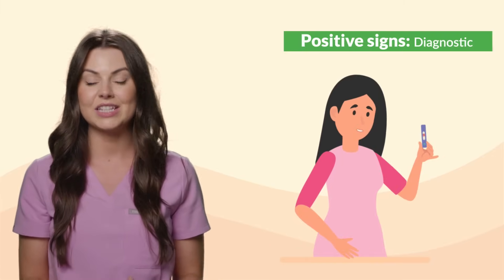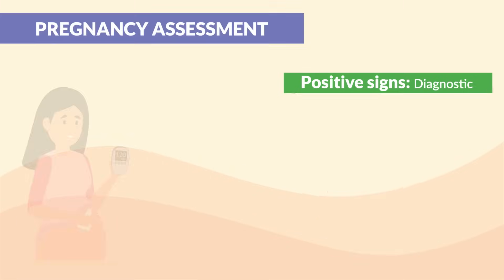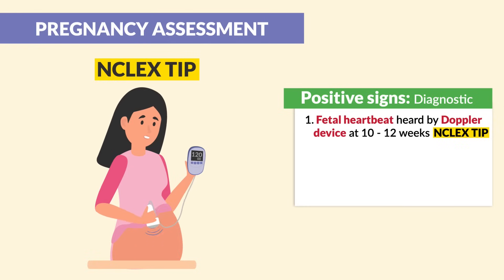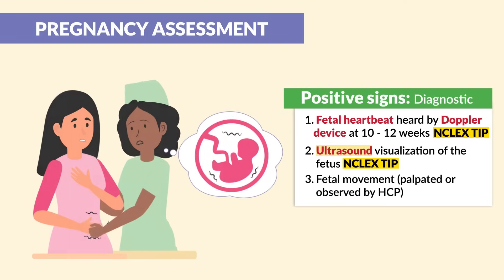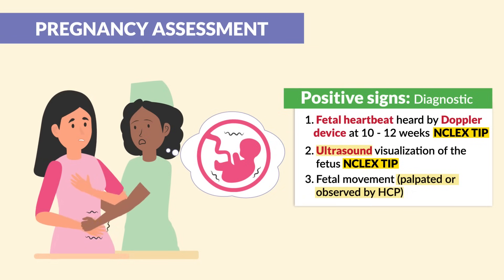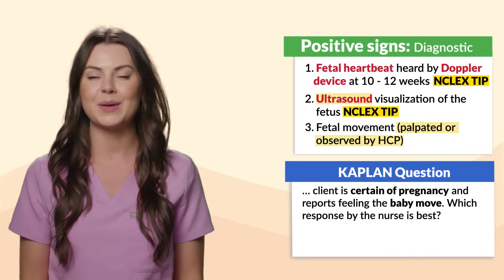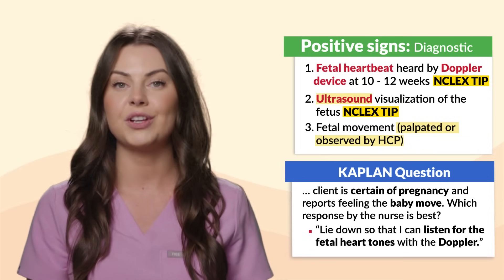Positive signs are known as diagnostic signs of pregnancy that provide absolute proof with conclusive evidence. These include: a fetal heartbeat heard by a Doppler device at the 10 to 12 week mark — a huge NCLEX tip; secondly, ultrasound visualization of the fetus; and lastly, fetal movement palpated or observed by the healthcare provider. Be sure to write these three down as absolute proof of pregnancy. Kaplan mentions a client who reports feeling the baby move — the best nurse response is to have the client lie down so you can listen for fetal heart tones with the Doppler.